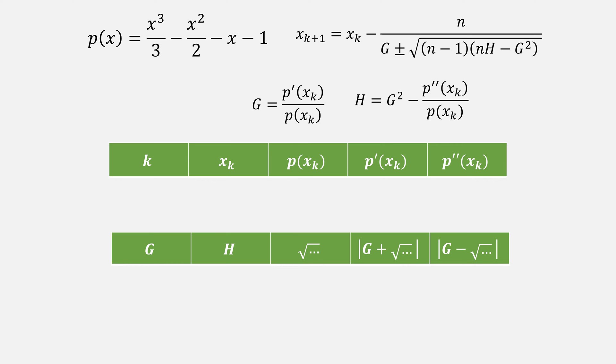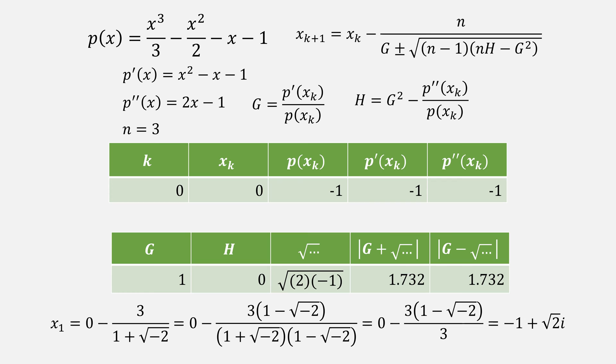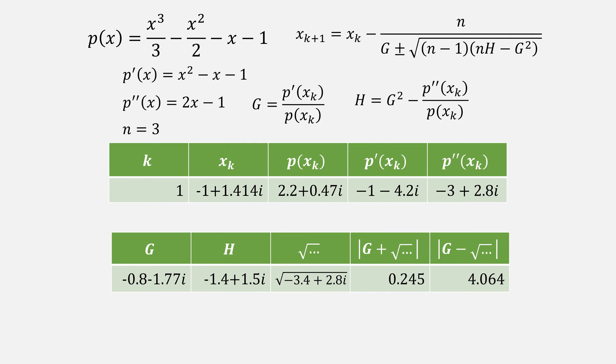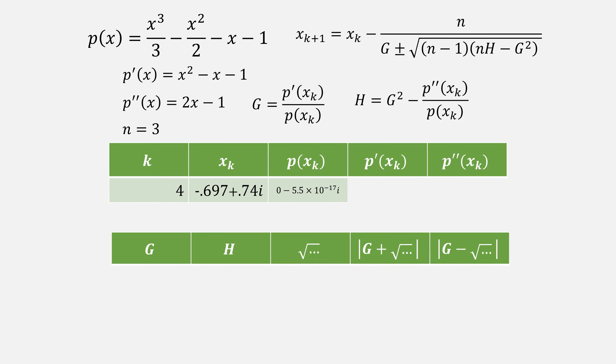Let's go back to our cubic equation from earlier. We'll still need p prime and p double prime, and in this case since our degree is 3, that is our value for n. Let's just start from the value of 0. Solve for all of our p's as well as g and h, plug them into our square root, and in this case it's not going to matter if we take the addition or subtraction. So let's use addition and solve for our next value of x, which is negative 1 plus square root of 2i. Then we just keep iterating, coming up with the value of about negative 0.7 plus 0.74i.